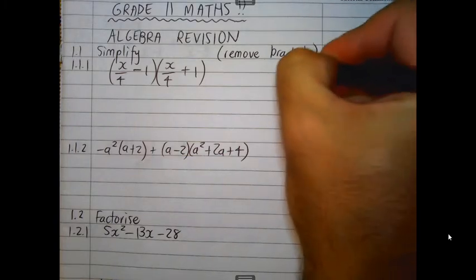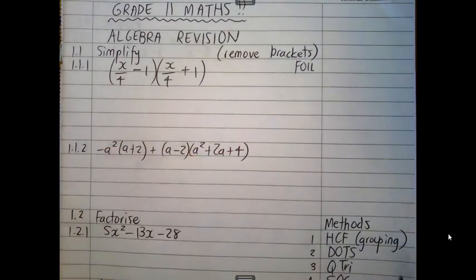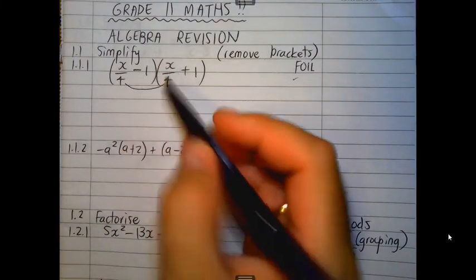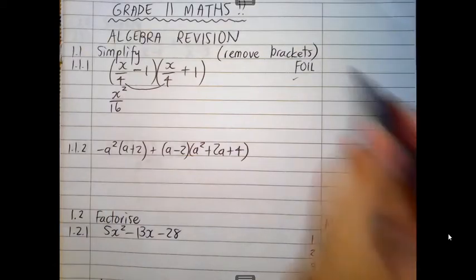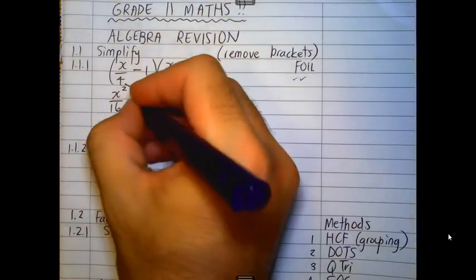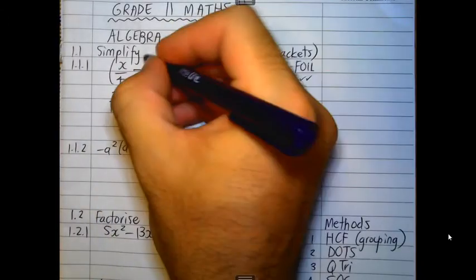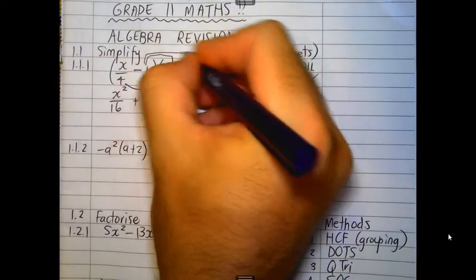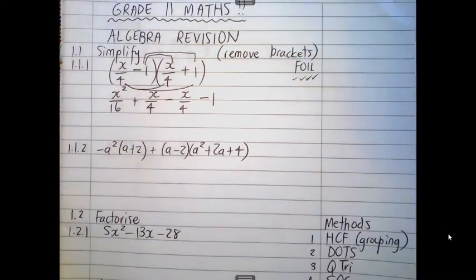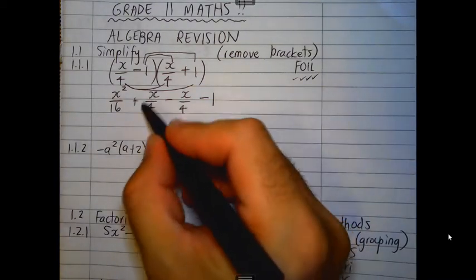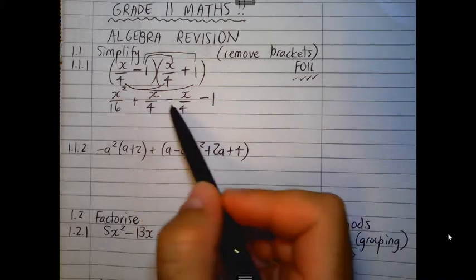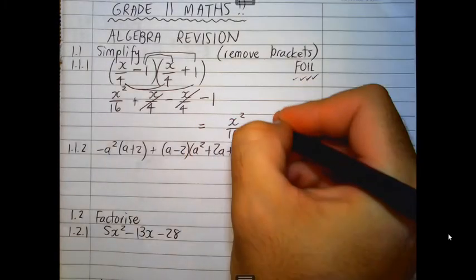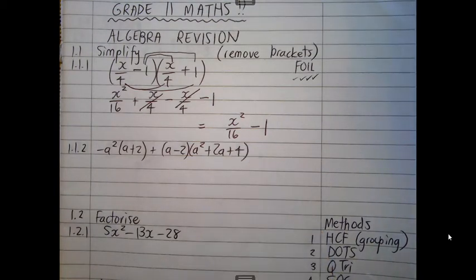So you would recall the method called FOIL, where you are going to multiply these items out here. So the first two terms must get multiplied as part of the F. X over 4 times X over 4 is X squared over 16. The outers would be X over 4 times 1, which remains X over 4. The inners is negative 1 times X over 4, which is negative X over 4. And the last is negative 1 times positive 1, which is negative 1. At this stage, we have to look for the like terms. And these two terms in the middle here are like terms. X over 4, negative X over 4. Those two terms would cancel. And our final answer would be X squared over 16 minus 1. We can't join those two terms together because they are not like terms.